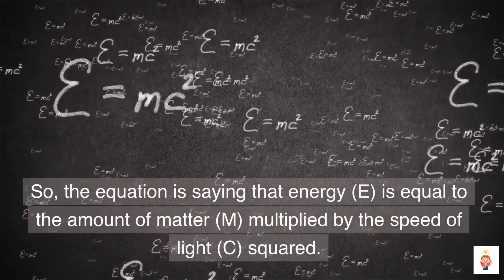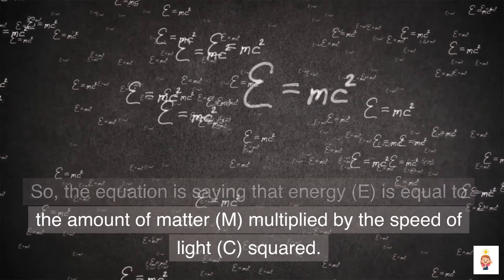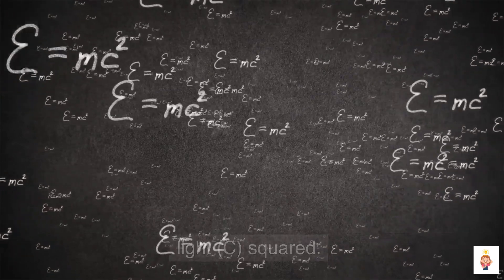So, the equation is saying that energy E is equal to the amount of matter M multiplied by the speed of light C squared.